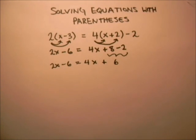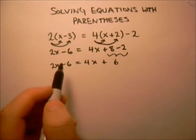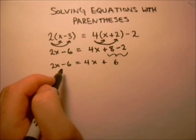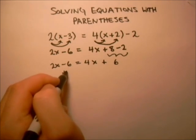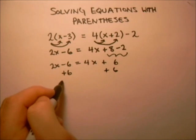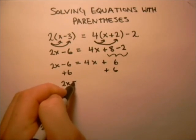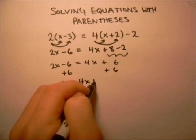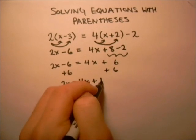Now the next step is to get everything that doesn't have an x in it over on the right hand side. And so this minus 6, we want to move over to the right hand side by adding 6. And so we're left with 2x equals 4x plus 6 plus 6 equals 12.